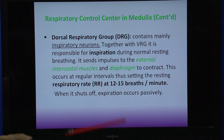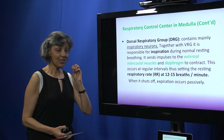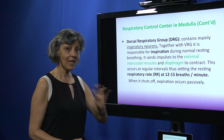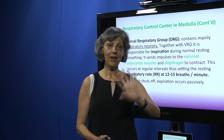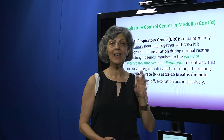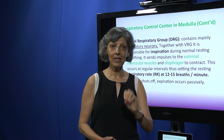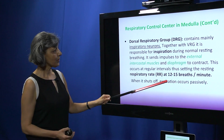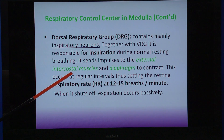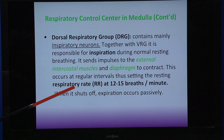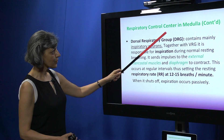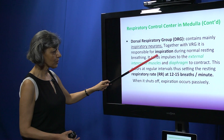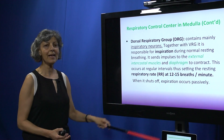The dorsal respiratory group mainly contains inspiratory neurons, meaning its main function is to send neural stimuli via the nerves to the inspiratory muscles, stimulating them at regular intervals to contract for inspiration to occur. It sends impulses to the external intercostal muscles and the diaphragm at a regular rhythm so that we breathe at a rate of 12 to 15 breaths per minute. Once this stops, expiration occurs as a passive process.